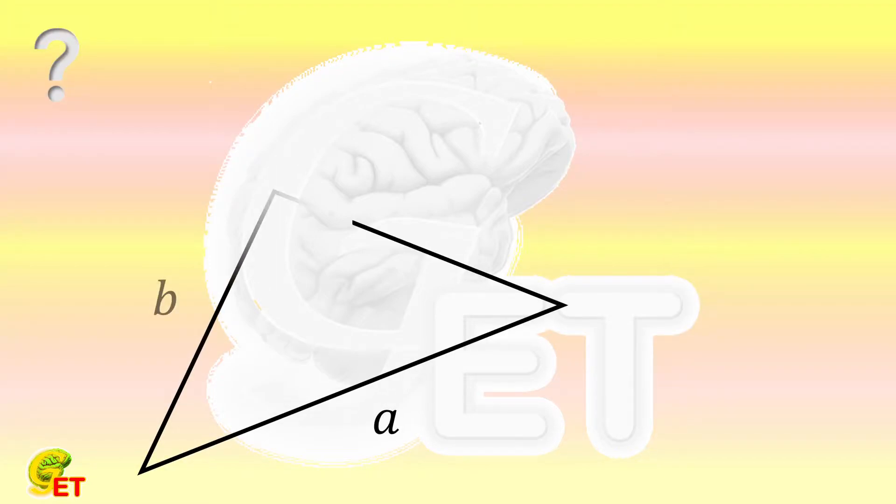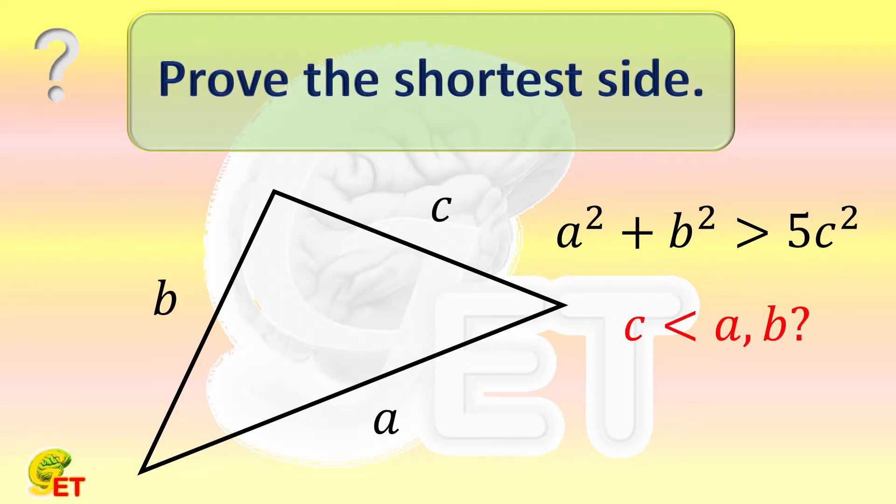The three sides of a triangle are A, B, and C respectively. It is known that the square of A plus the square of B is bigger than 5 times the square of C. Would you like to prove that C is the shortest side of this triangle?